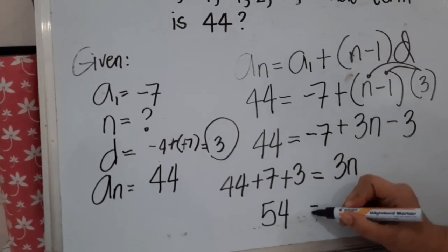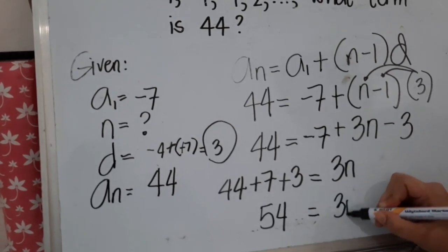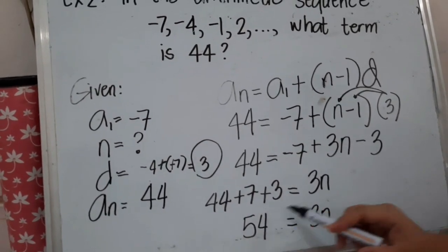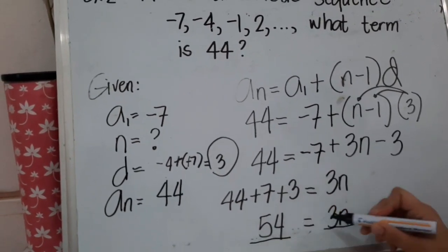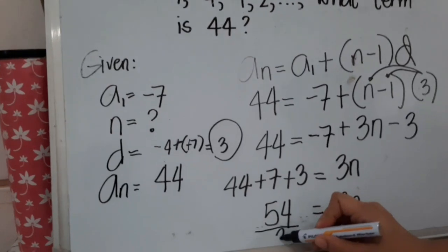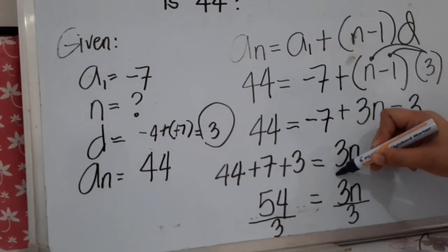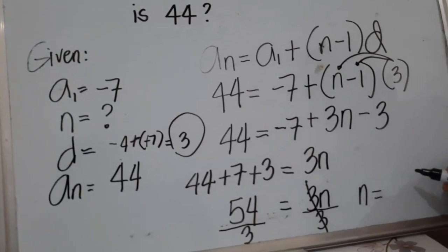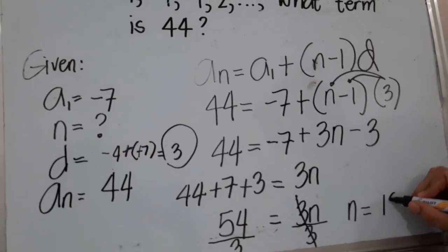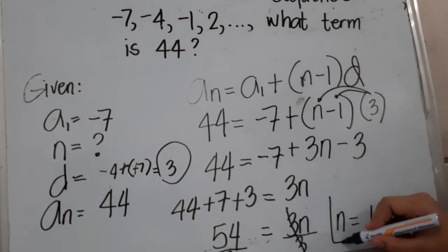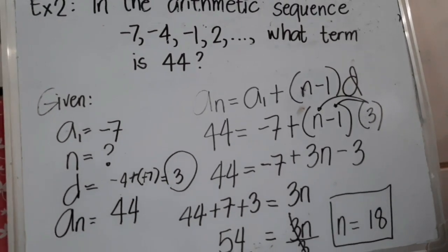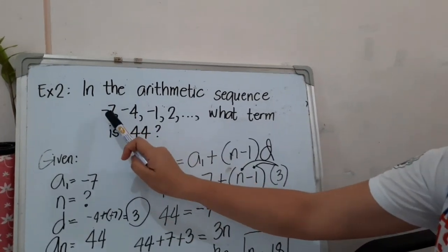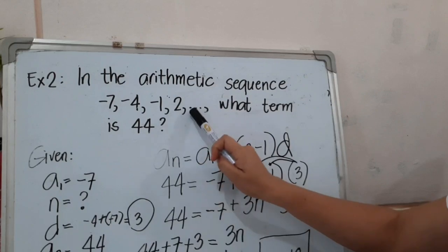Since we have 54 = 3n, we use the division property of equality and divide both sides by 3. So n = 54 ÷ 3, which equals 18. Therefore, 44 is the 18th term of the sequence -7, -4, -1, 2, and so on.